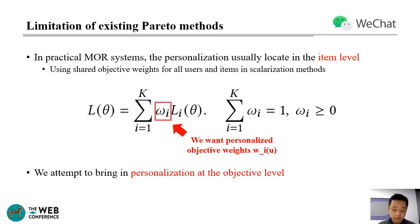There are several works that have brought Pareto-Efficiency into multi-objective recommendation. However, these works are often based on the scalarization method with a shared objective weight set for all users and items, ignoring the user's objective-level preferences. In scalarization, we want personalized objective weights omega_i for different users and items. Therefore, we attempt to bring in personalization at the objective level.